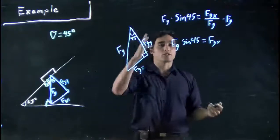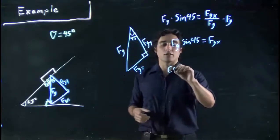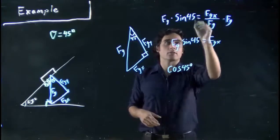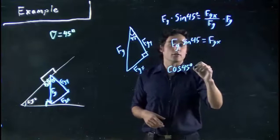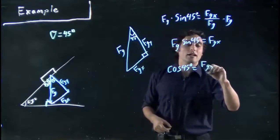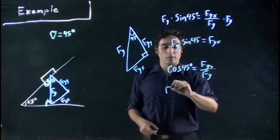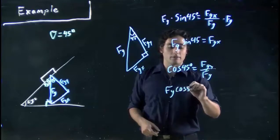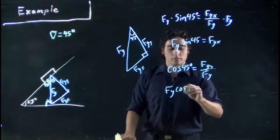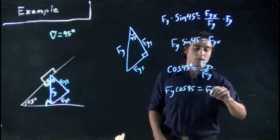If we wanted to, we could also do the same thing for Fg,y. In this case, it's not really important for us. But we could have just as easily wrote cos of 45. And I should be writing degrees as always. Cos of 45. Cos is adjacent over hypotenuse. So Fg,y over Fg. Very similarly, we get Fg cos 45 equals Fg,y.